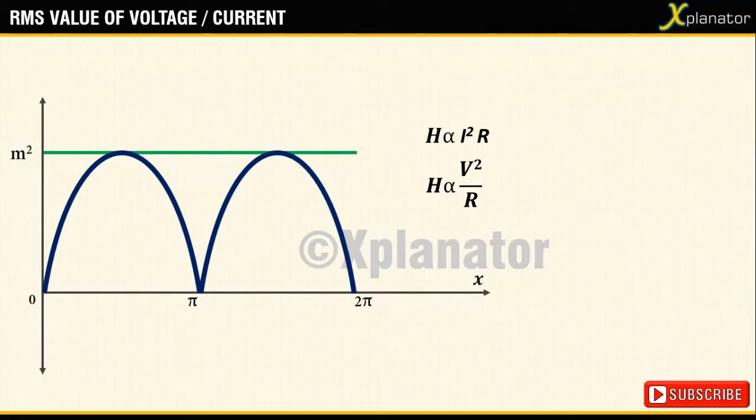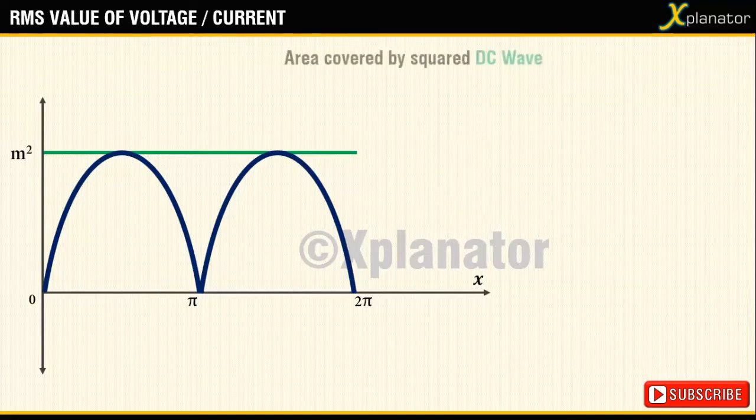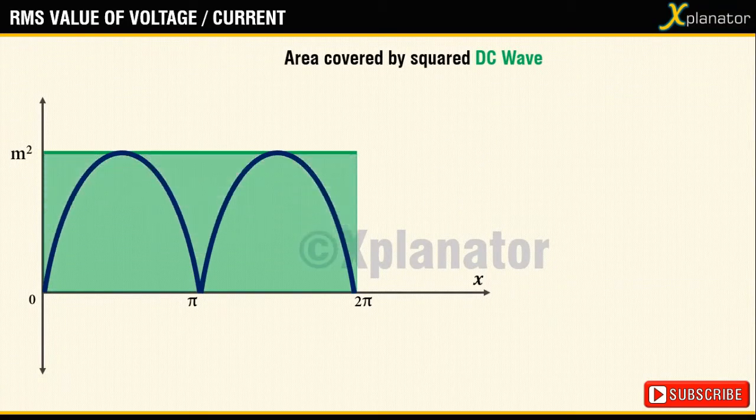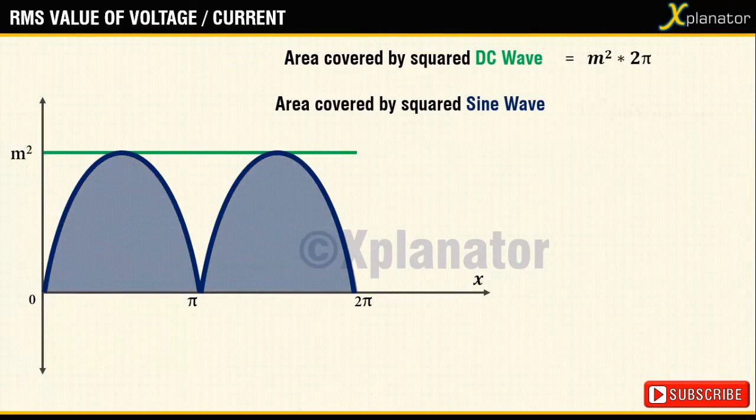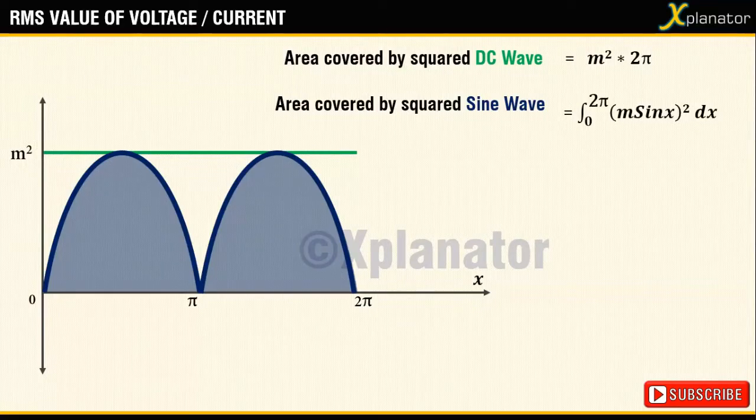The area under the squared DC wave will be m² multiplied by 2π and the area occupied by the AC wave will be integration of m sin x the whole square over the complete cycle i.e. from 0 to 2π.